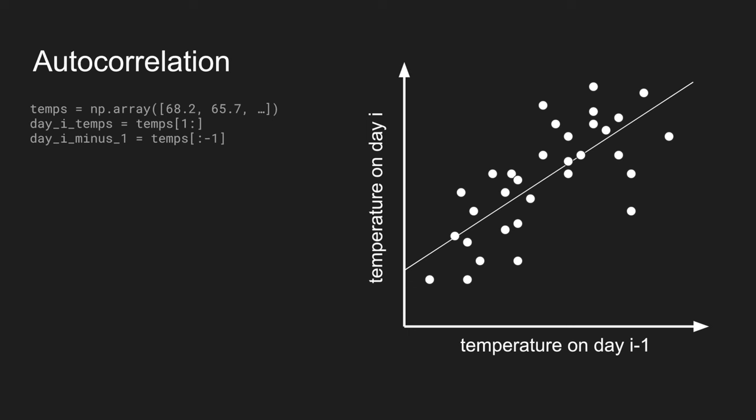Instead, because temperature is a time series, we can do this trick where we shift it by one day, and we correlate whatever the temperature is on day I with whatever it was on I minus 1. So, we're always comparing the temperature on one day to the temperature on the day before.